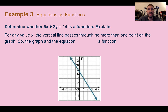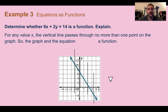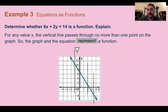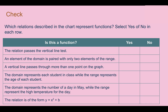Example 3 — equations as functions: determine whether 6x plus 2y equals 14 is a function. We're given a graph, so we use the vertical line test. Drawing vertical lines, is there ever a place where a vertical line goes through more than one point? No — each vertical line passes through no more than one point, so yes, this represents a function.